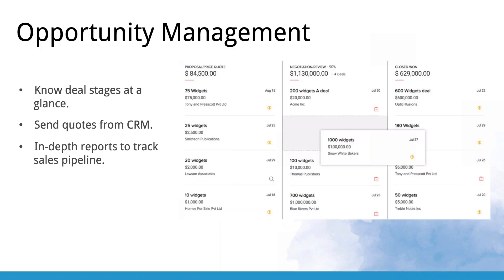Zoho CRM has pre-built stages — qualification, needs analysis, price quote, and more — that are completely customizable. We recommend you change those stages to match your actual business process, whether that means going from step A to step B to close, or having multiple steps in between. You can customize the stages to follow the workflow your business actually uses.